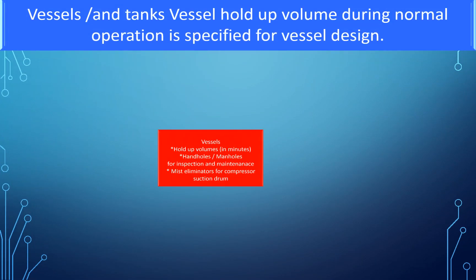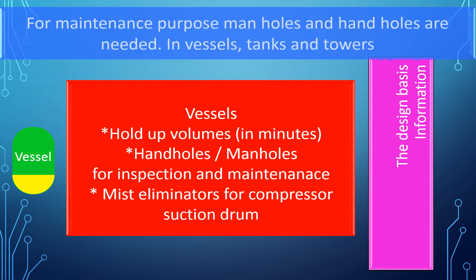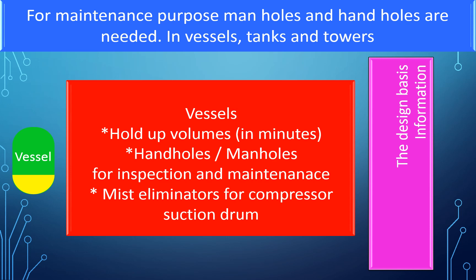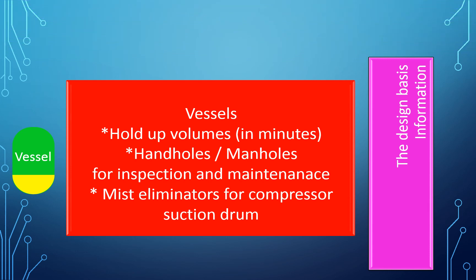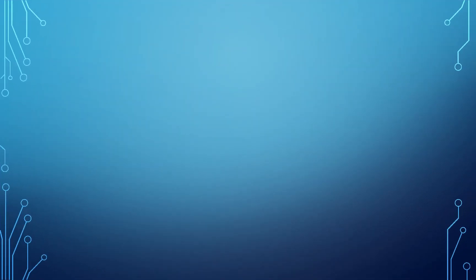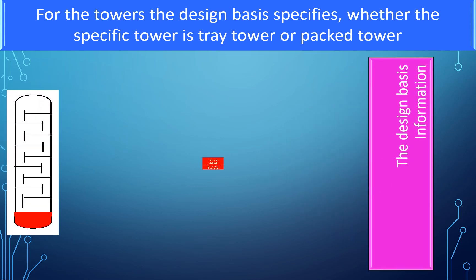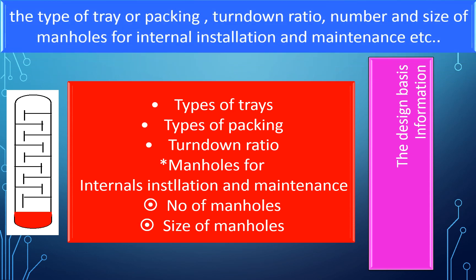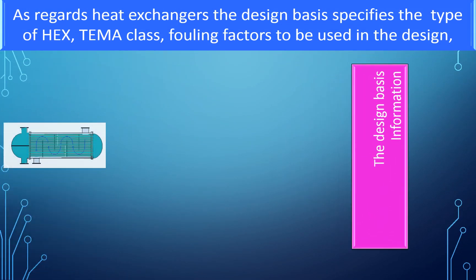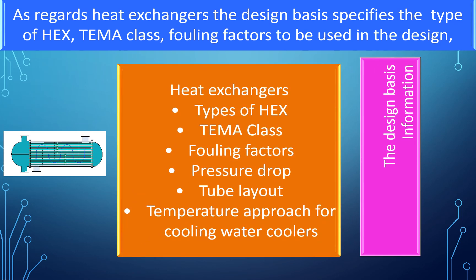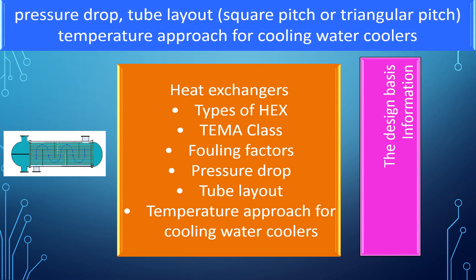Vessels and tanks: Vessel hold-up volume during normal operation is specified for vessel design. For maintenance purposes, manholes and handholes are needed in vessels, tanks, and towers, specified for individual equipment depending on size. For towers, the design basis specifies whether it is a tray tower or packed tower, the type of tray or packing, the turn-down ratio, and the number and size of manholes. For heat exchangers, the design basis specifies the type of heat exchanger, TEMA class, fouling factors, pressure drop, tube layout (square pitch or triangular pitch), and temperature approach for cooling water coolers.